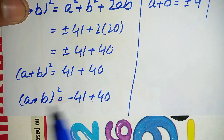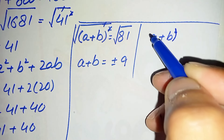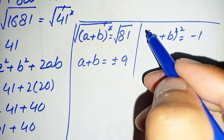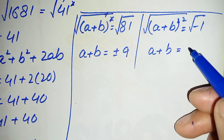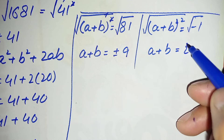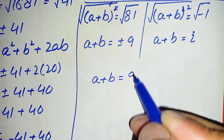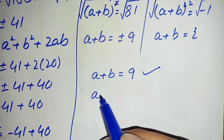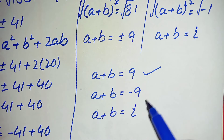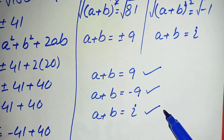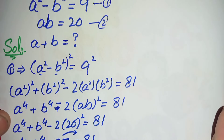For the second case, (a + b)² = -1, so taking square root on both sides gives a + b = √(-1) = i (iota), which is a complex number. So we have three solutions: a + b = 9, a + b = -9 (the two real solutions), and a + b = i (the complex solution). If you like this video, don't forget to subscribe to my YouTube channel. Thanks for watching.